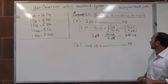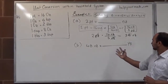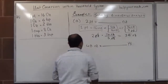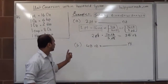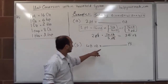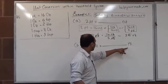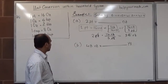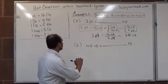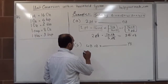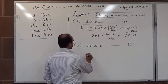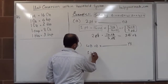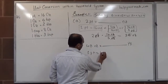Let us solve the next problem, B, also using dimensional analysis. We have 48 ounces equals how many pints? As we discussed earlier, we know the conversion factor: 1 pint equals 16 ounces.